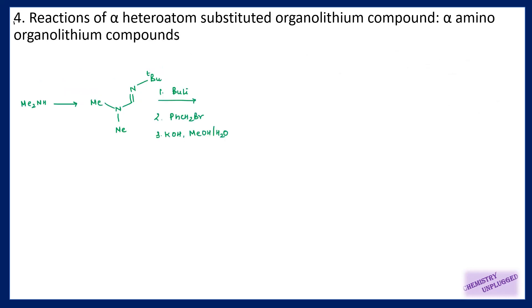Then the fourth reaction — this is a very important reaction: the reaction of alpha heterosubstituted organolithium compounds. In this reaction we are using alpha-amino organolithium compounds. First we have to generate alpha-amino organolithium compounds, then we can use them with an electrophile. Here I have a secondary amine, and I can write down its structure like this. If I am directly using an organolithium compound on this secondary amine, it cannot remove a hydrogen from the nitrogen.